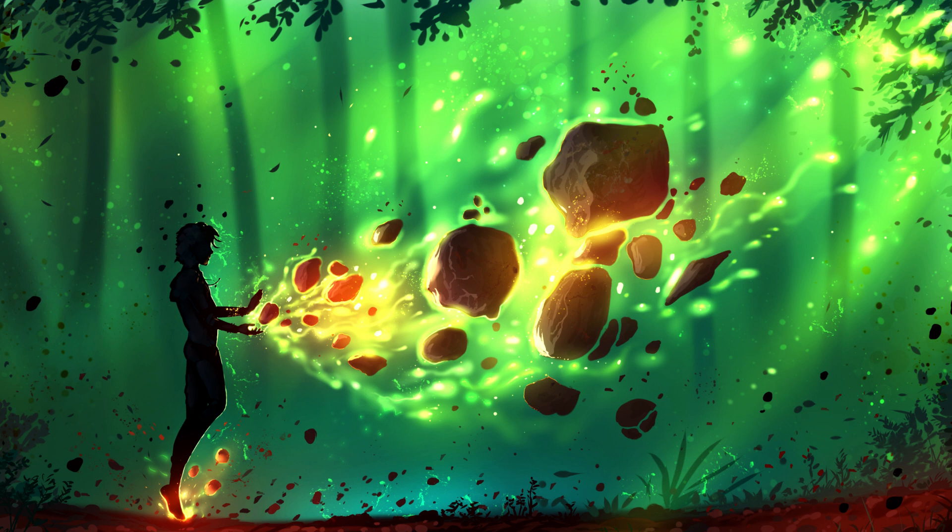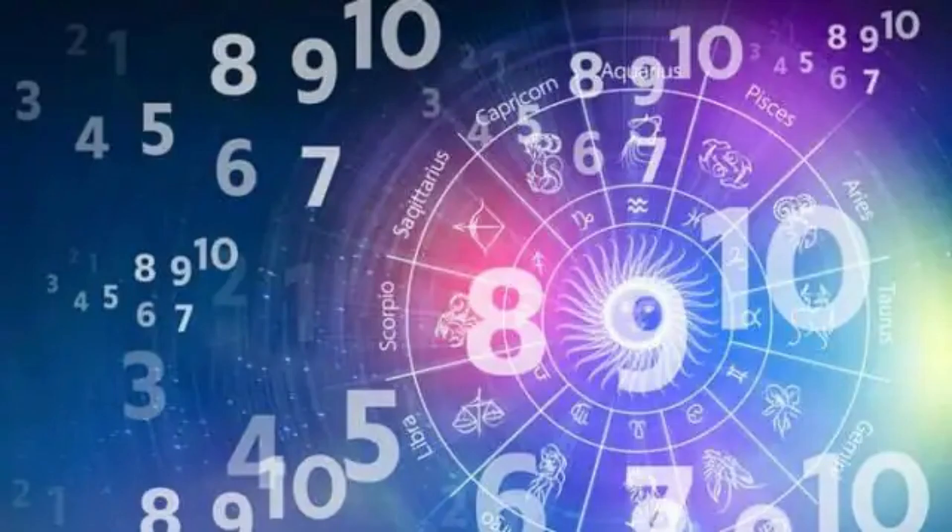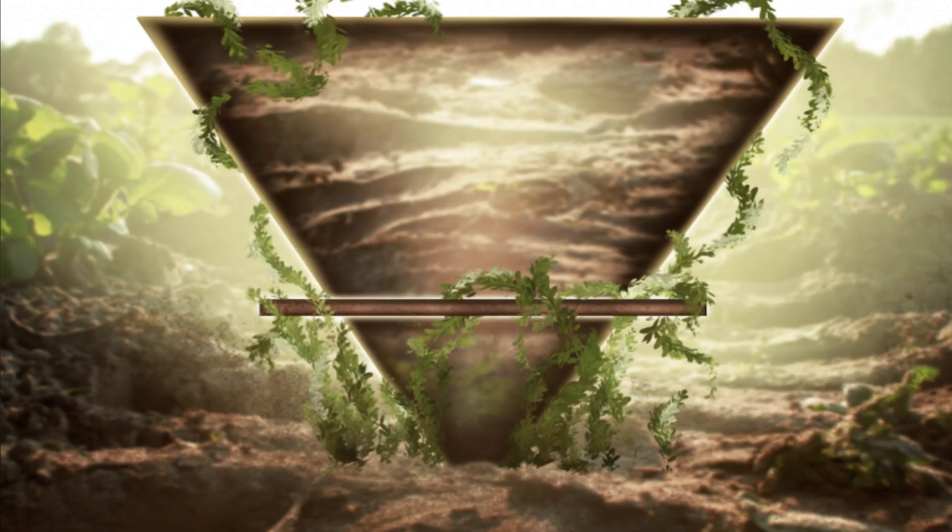The numbers that represent the Earth element are Number 2, 5, and 8. These are the 3 numbers. If these numbers are missing from your date of birth chart, or you have only one or two of them, that indicates a weak Earth element. Today I am telling you about the Earth element remedies.